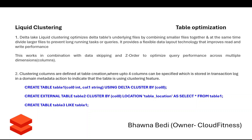Liquid clustering optimizes Delta tables by combining smaller files together into a larger, good-sized chunk, because reading a lot of small files in a table requires scanning many files. It also divides larger files to prevent long-running tasks or queries. So it is a flexible data layout technology that improves both read and write performance, working in combination with data skipping and z-order.